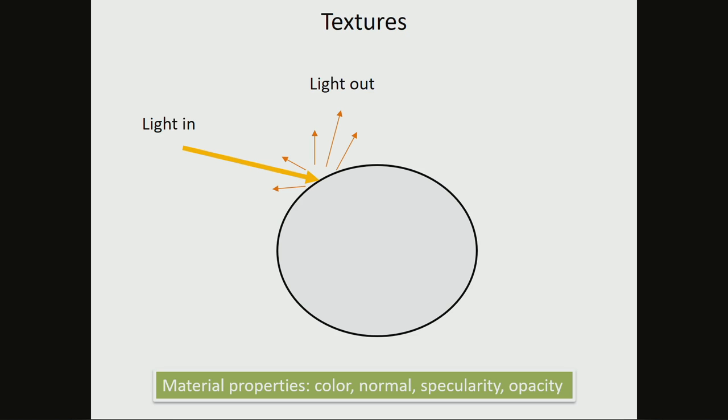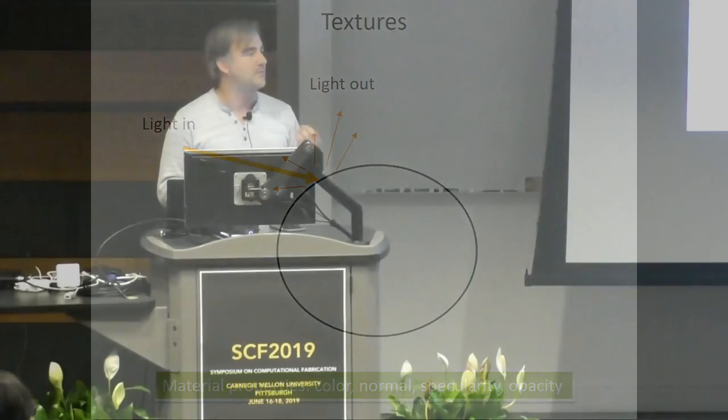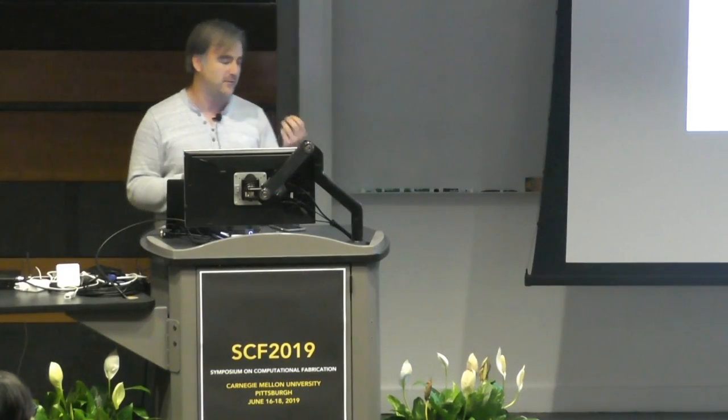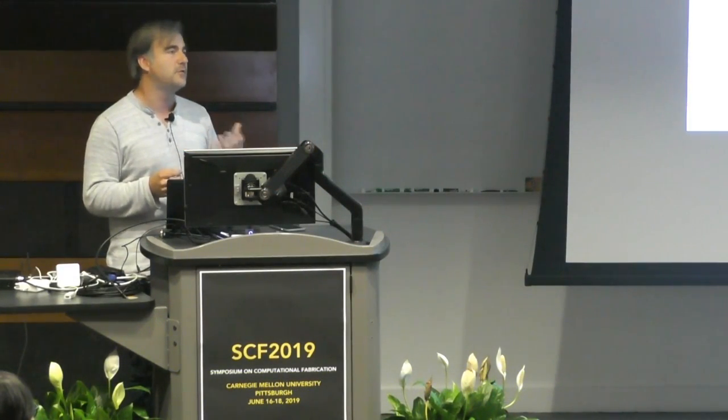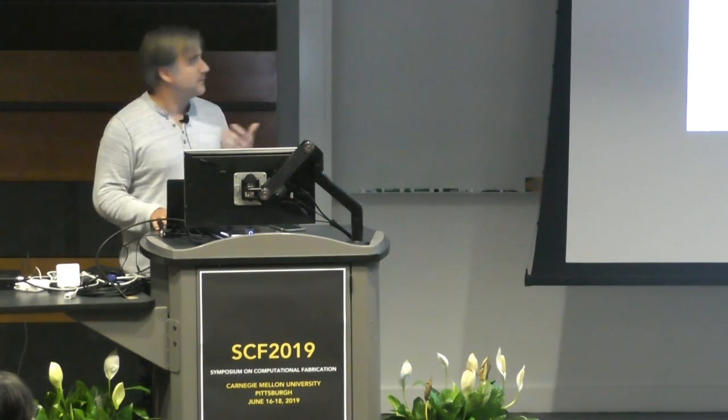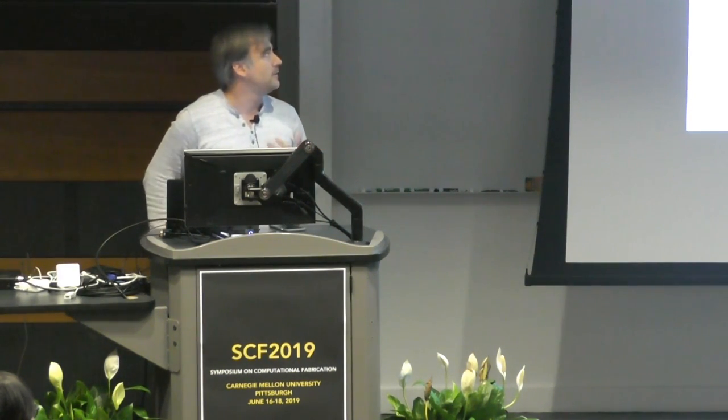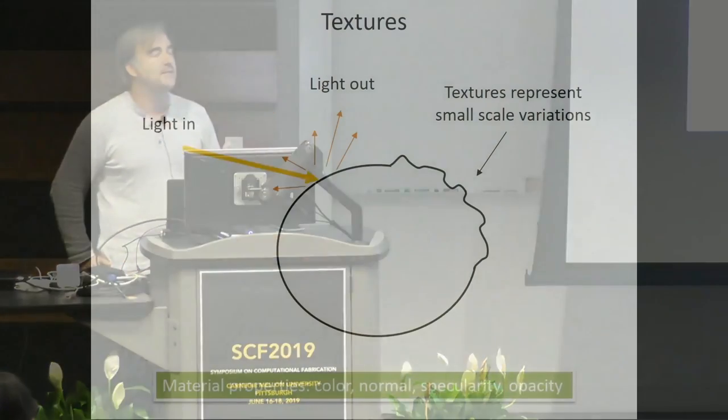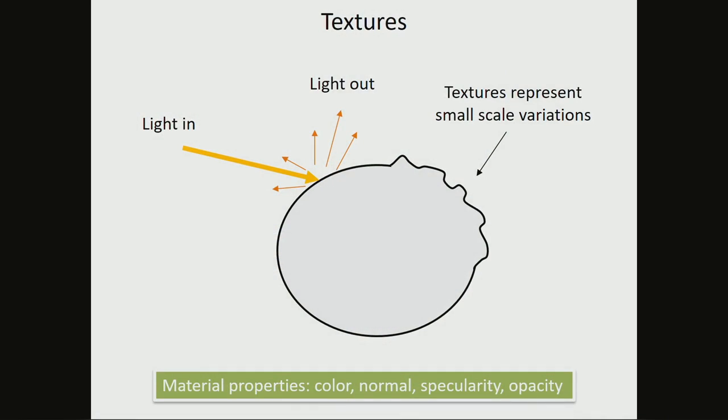Because in reality, all surfaces have little imperfections. These little imperfections is what makes them look realistic, what makes you perceive that you have a surface made of wood, marble, or any material you can imagine. So very early researchers looked at ways to represent these small-scale imperfections along surfaces. In graphics, what we're interested in are properties such as color, normal, specularity, and opacity. So this is what we try to encode in these textures.